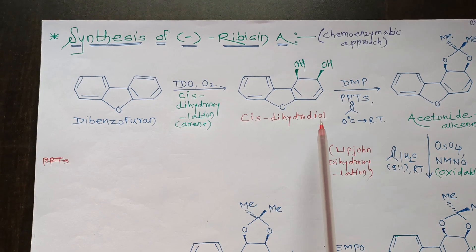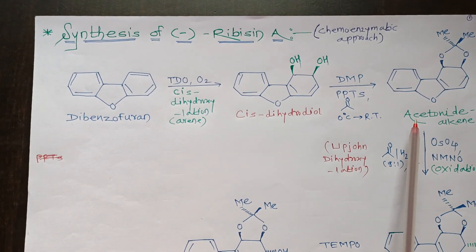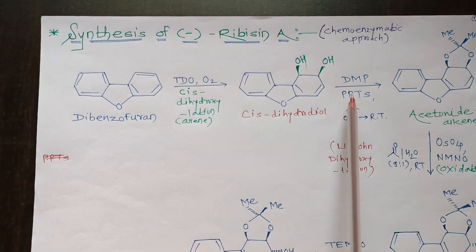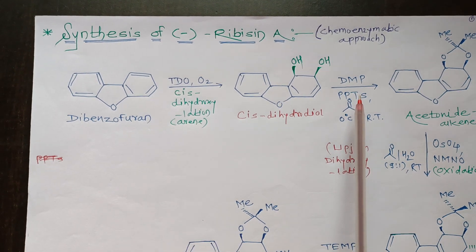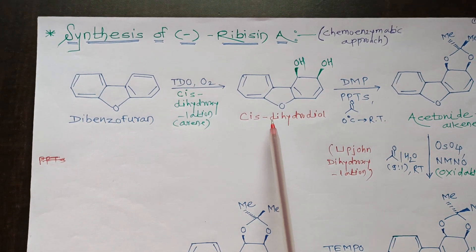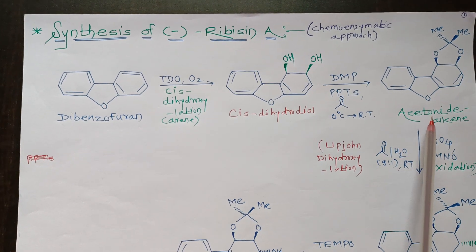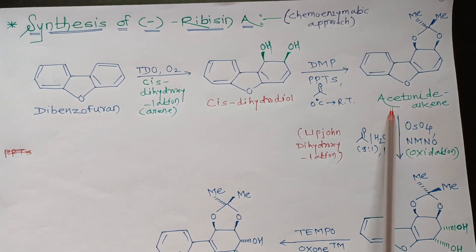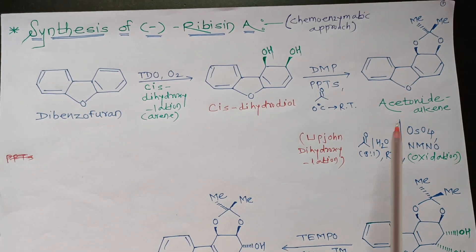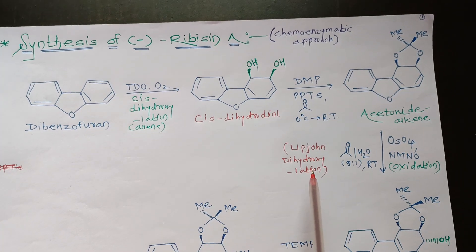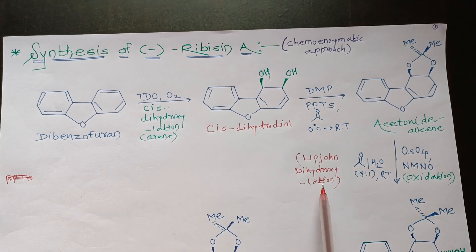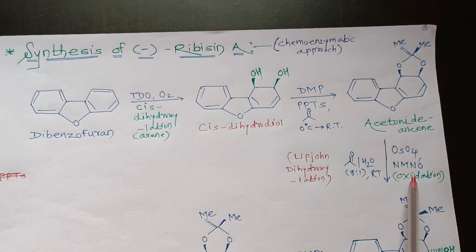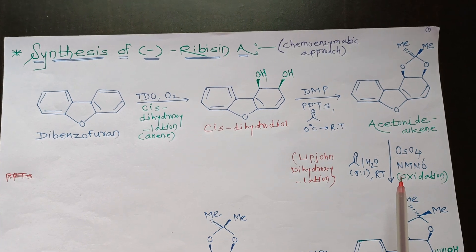Using weak acid catalyst such as PPTS in the presence of DMP, the cis-dihydrodiol was converted into an acetonide alkene intermediate. PPTS means pyridinium para-toluenesulfonate; DMP refers to Dess–Martin periodinane. So the cis-dihydrodiol is converted into the acetonide alkene, which represents protection of the diol in the form of a cyclic ketal.